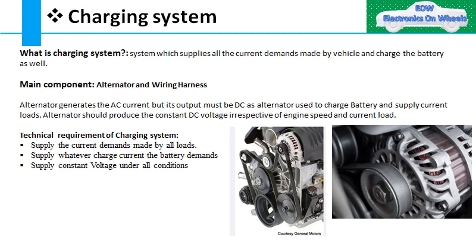The alternator generates AC current, and after the voltage regulator its output is DC current, which is supplied to the battery and loads. The alternator should produce constant DC voltage irrespective of engine speed and current load.